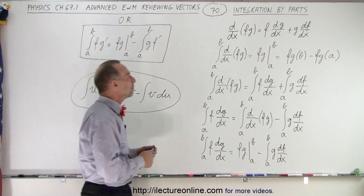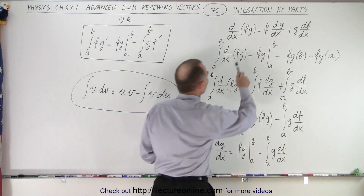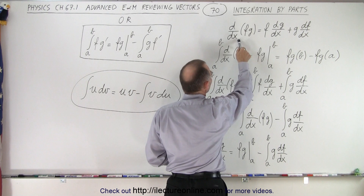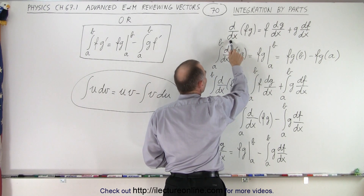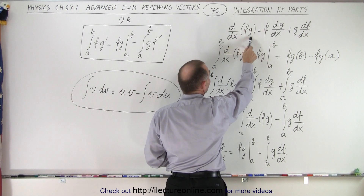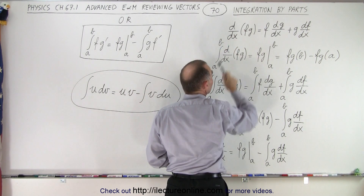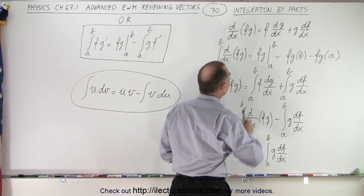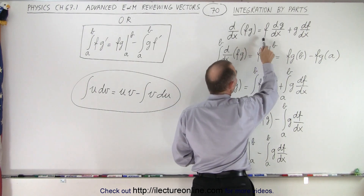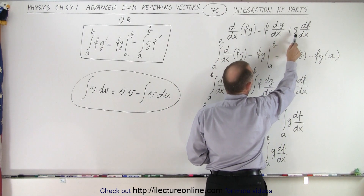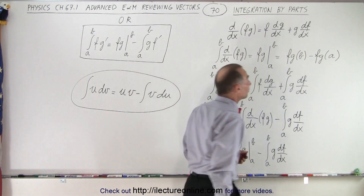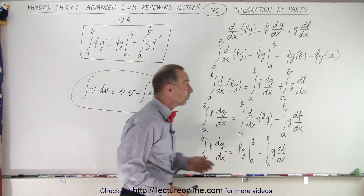We start with the basic product rule of derivatives. The d/dx — the derivative with respect to x of a product of two functions f and g — is equal to the first times the derivative of the second, plus the second times the derivative of the first.